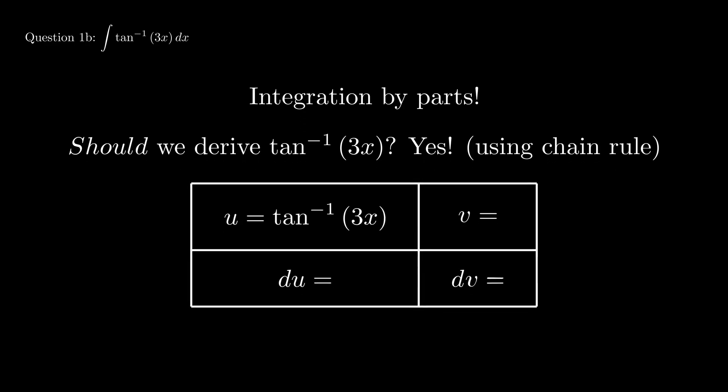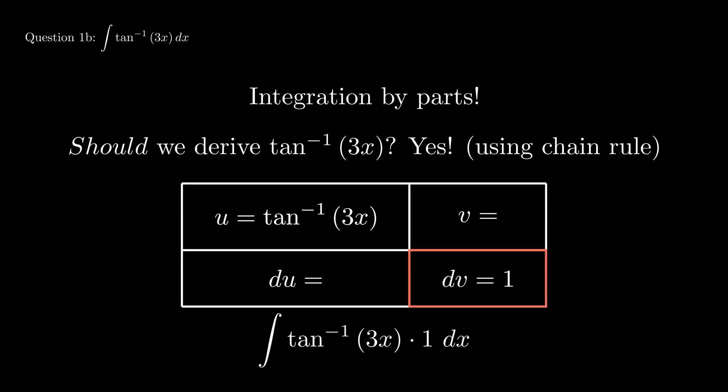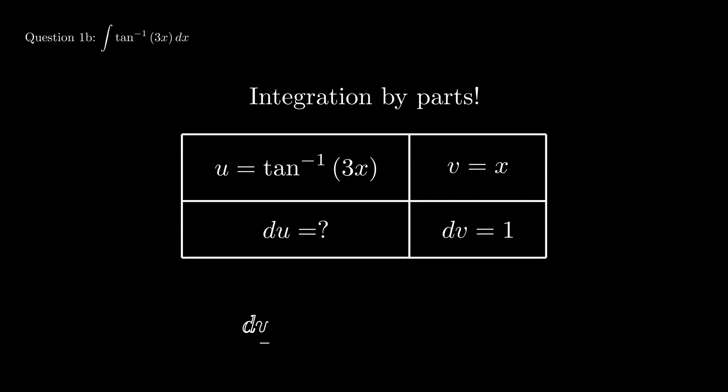By now you might be asking, well, what about dv? Well, dv has to be 1, because we are taking factors of the expression and distributing it amongst u and dv, and 1 is a factor. We can easily find the antiderivative of 1, it's just x. But what about du? Well, recall the derivative of arctangent, which can be more conveniently rewritten as this. Replace the x with 3x, and don't forget to apply chain rule.